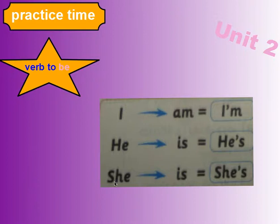She is, abbreviation she's. So: I am, he is, and she is — these are the verb to be forms for the singular pronouns I, he, and she.